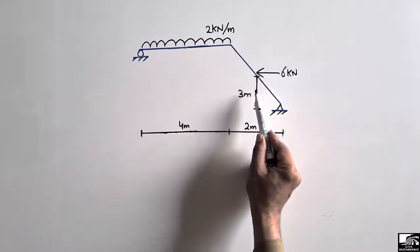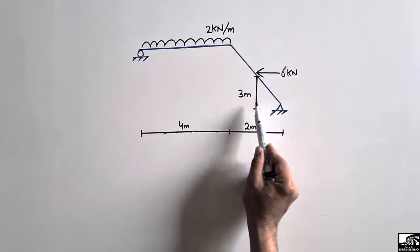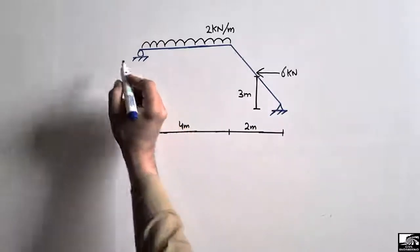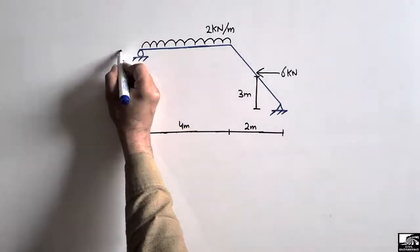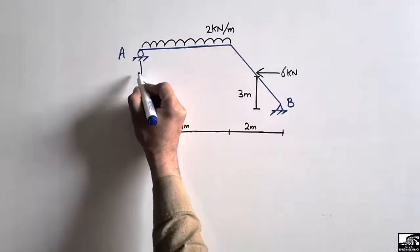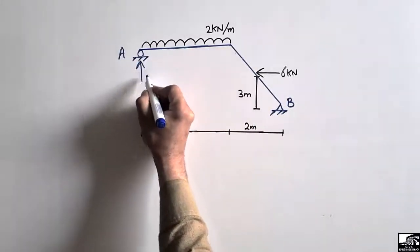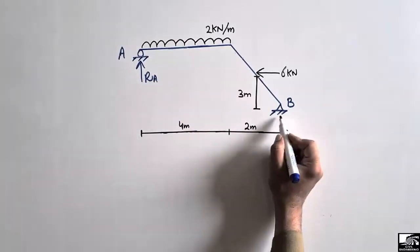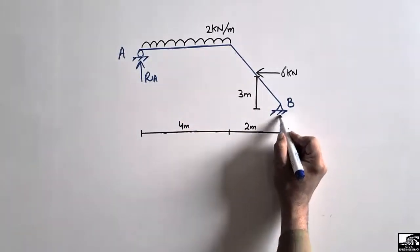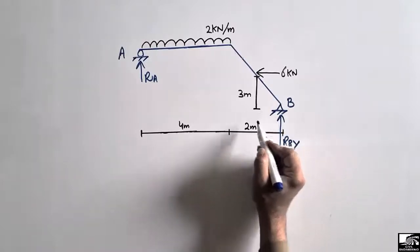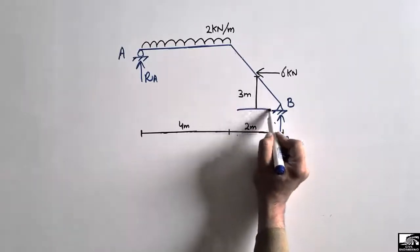The distance from this point up to the hinge support is 3 meters. To start finding the support reactions, let's consider this is support A and this is support B. Support A is a roller support, so it can only take the vertical reaction RA. Support B is a hinge support, so it can resist both the vertical reaction RBy and the horizontal reaction RBx.